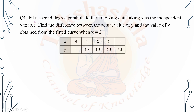The first problem is: fit a second degree parabola to the following data, taking x as the independent variable. Find the difference between the actual value of y and the value of y obtained from the fitted curve when x is equal to 2.